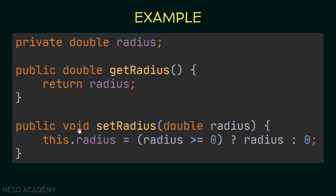To change the value of the radius, we create a setter: a public method that returns nothing, called setRadius. It is a convention to name getters and setters this way. We give the setter a double radius parameter. Inside, we use a ternary operator: if the radius parameter is greater than or equal to zero, we assign it to the radius attribute; otherwise, if it is negative, we assign the attribute to be equal to zero. Now we have control over whether or not to assign the value.